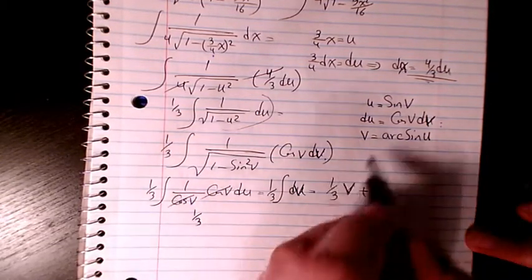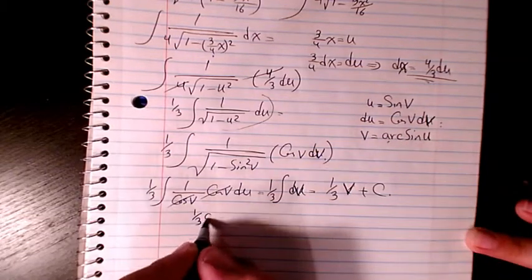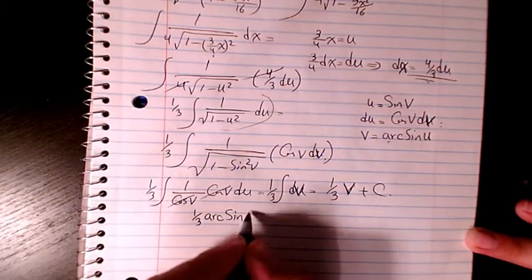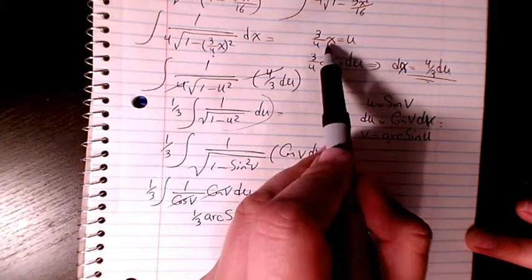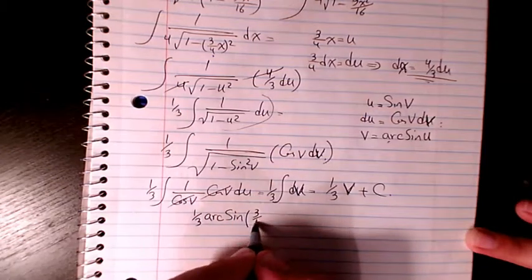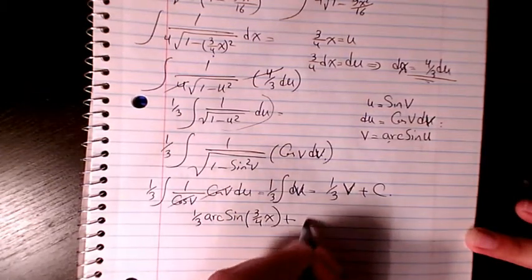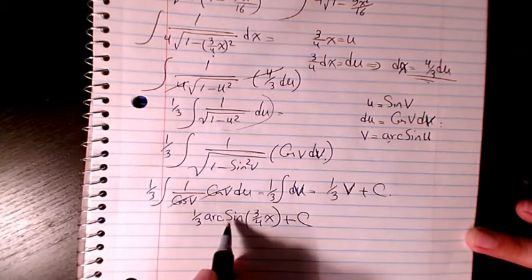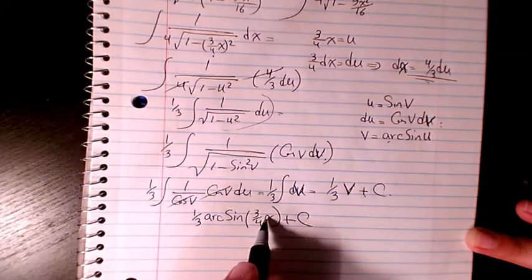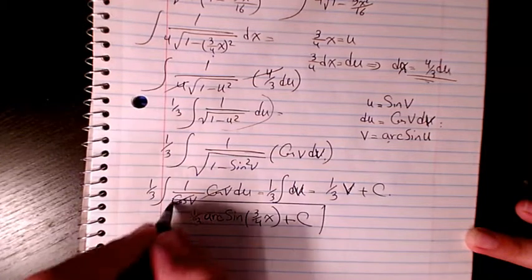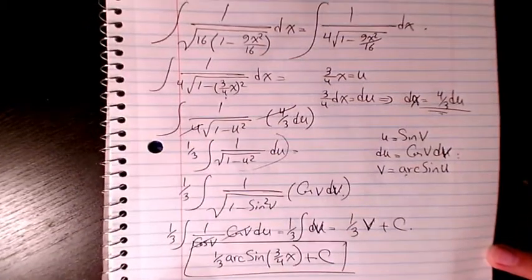So v is arc sine u and u is 3 over 4x, so it's going to be 1 over 3 arc sine 3 over 4x plus c. So that's the final answer. I hope you like